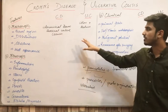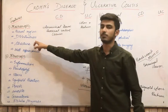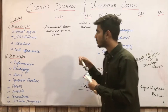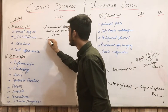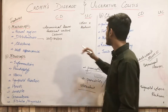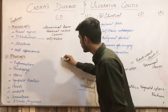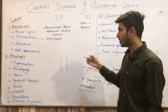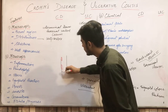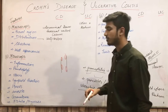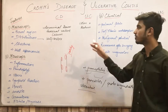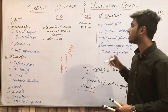Moving on to the second macroscopic feature: distribution — how the lesions are distributed in each disease. In Crohn's disease, the distribution is skip lesions, meaning patchy lesions. For example, in your small intestine, lesions are present here, then a gap, then a lesion, then a gap — they are patchy. In Crohn's disease, skip lesions or patchy lesions are present.